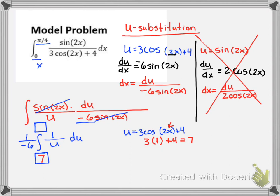The upper one will be when I substitute the upper limit of integration for x, which was π over 4. Well now 2 times π over 4 is really π over 2. Cosine of π over 2 turns this whole entire first term into 0, plus 4. So I'm going to go from 7 to 4.